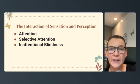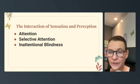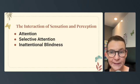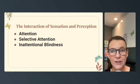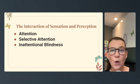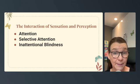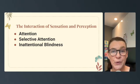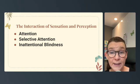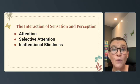Let's talk about the interaction of sensation and perception — specifically attention, selective attention, and inattentional blindness. Attention is the focused awareness on a particular stimulus while ignoring everything else. Selective attention — for example, the cocktail party effect — focuses on one conversation in a noisy room. Inattentional blindness is failing to notice something unexpected because your attention is so focused somewhere else.